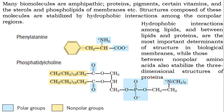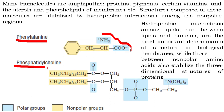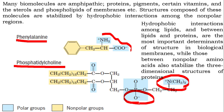In a biochemical system, many biomolecules are amphipathic in nature. For example, phenylalanine is an amino acid whose polar regions can interact with water. Whenever phenylalanine is present in a protein, its R-group has hydrophilic regions interacting with water. Also, phosphatidylcholine is a phospholipid with a charged region that can interact with water, forming a hydrophilic region that interacts with water, while its hydrocarbon tails are hydrophobic.